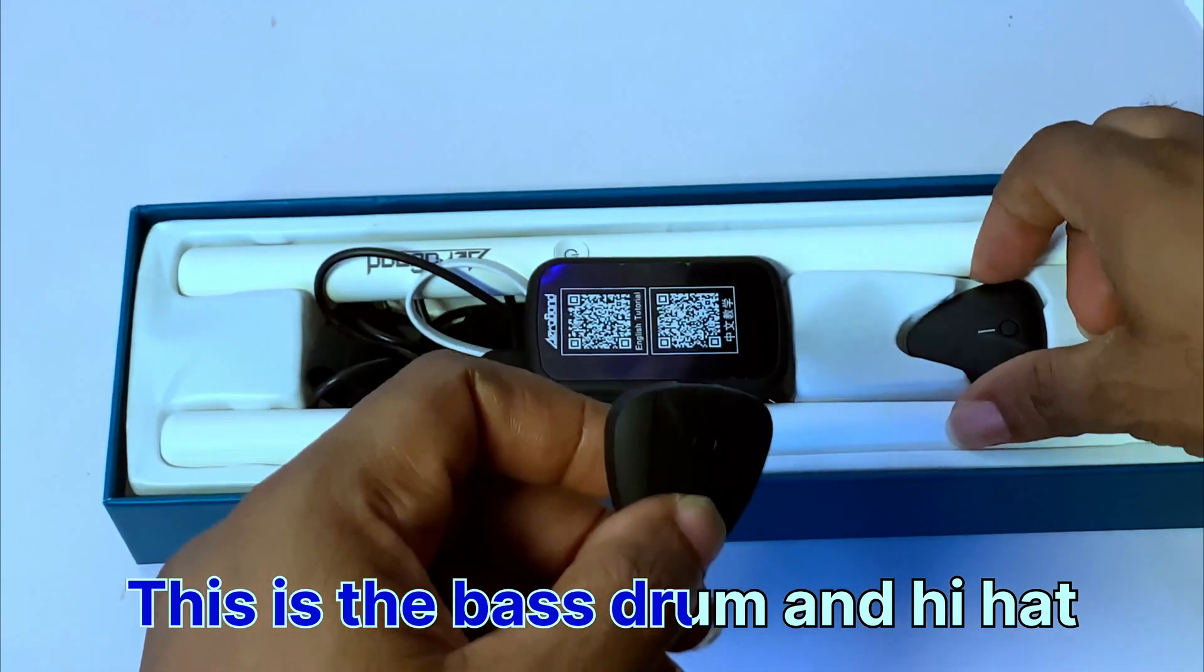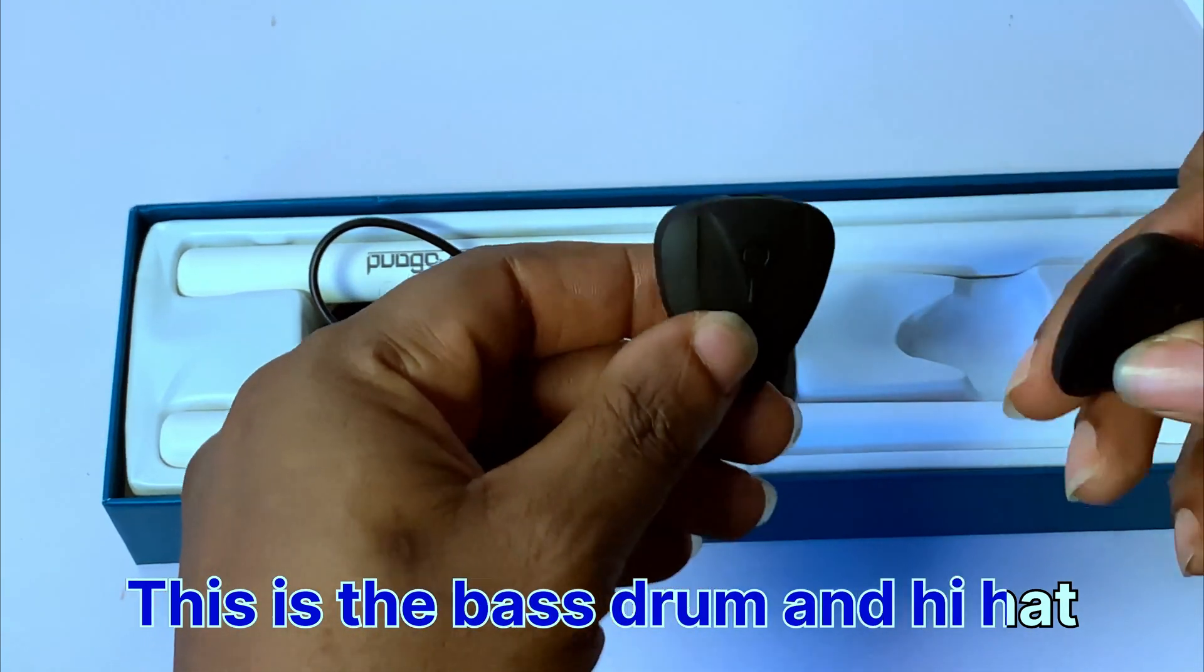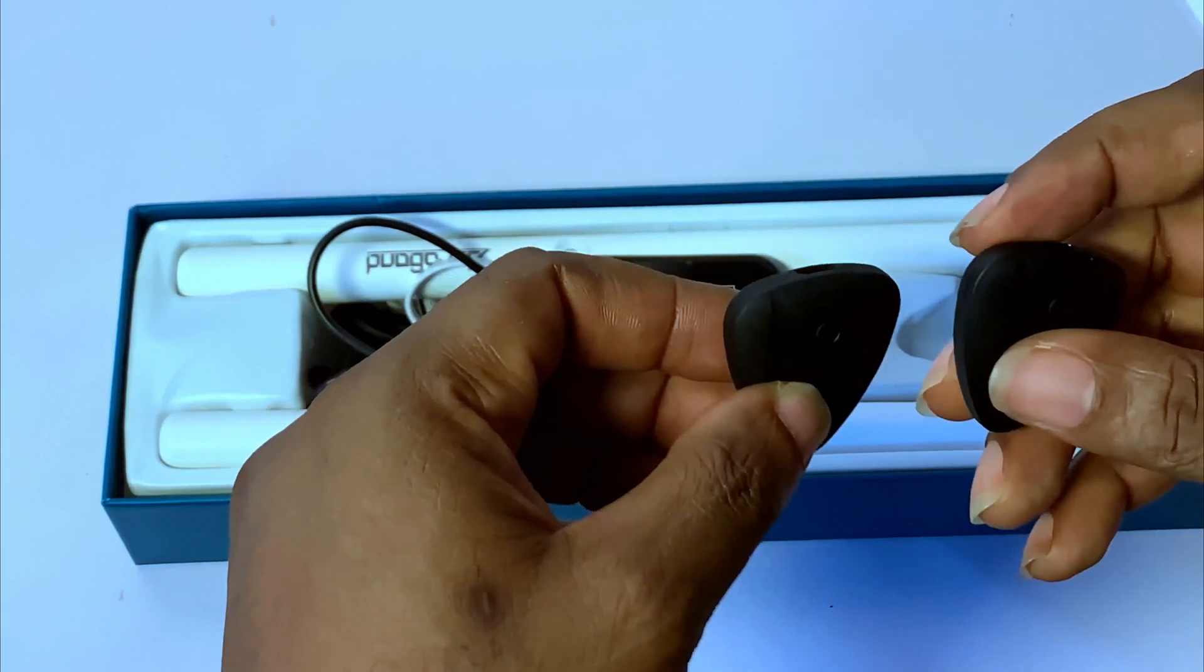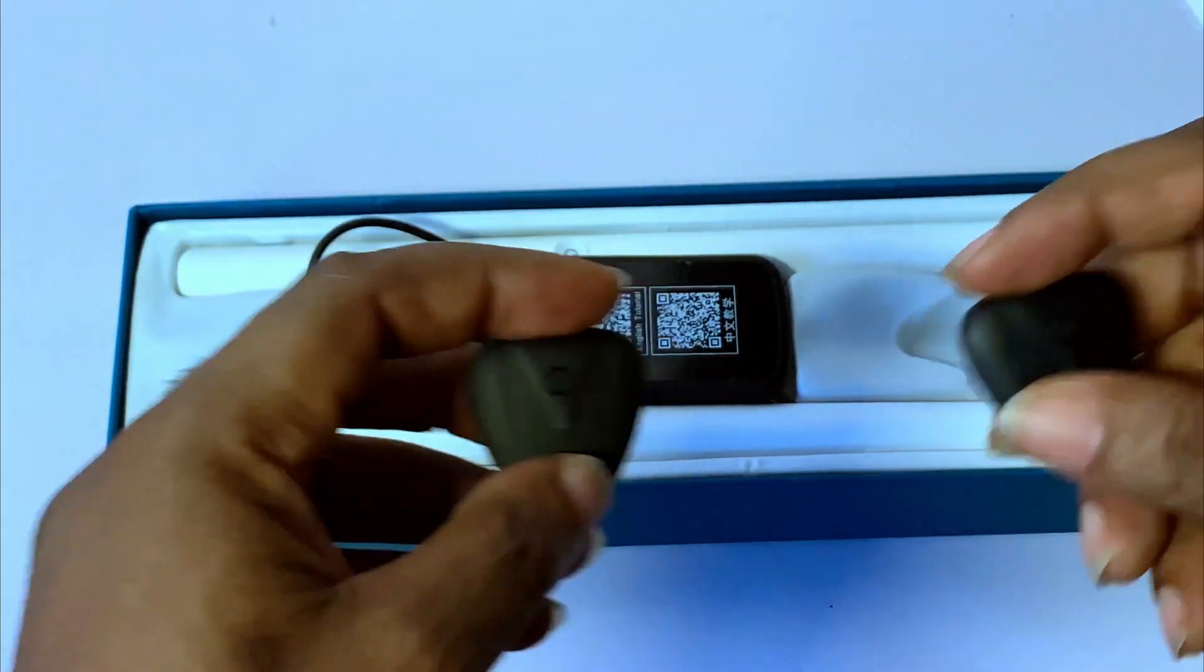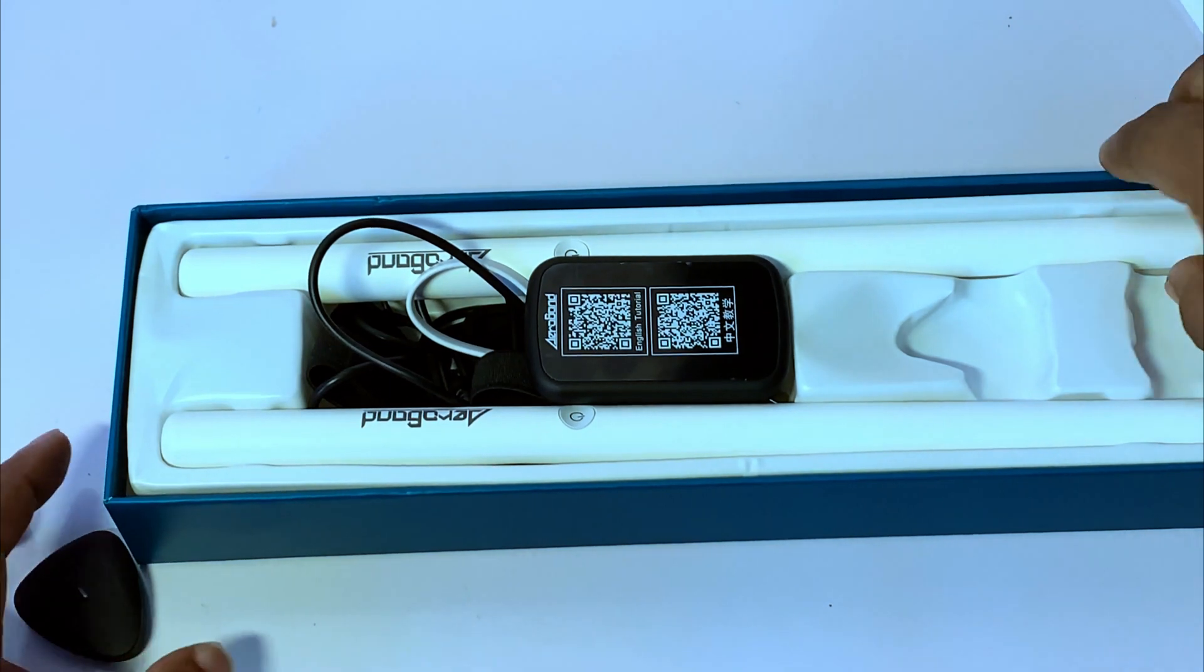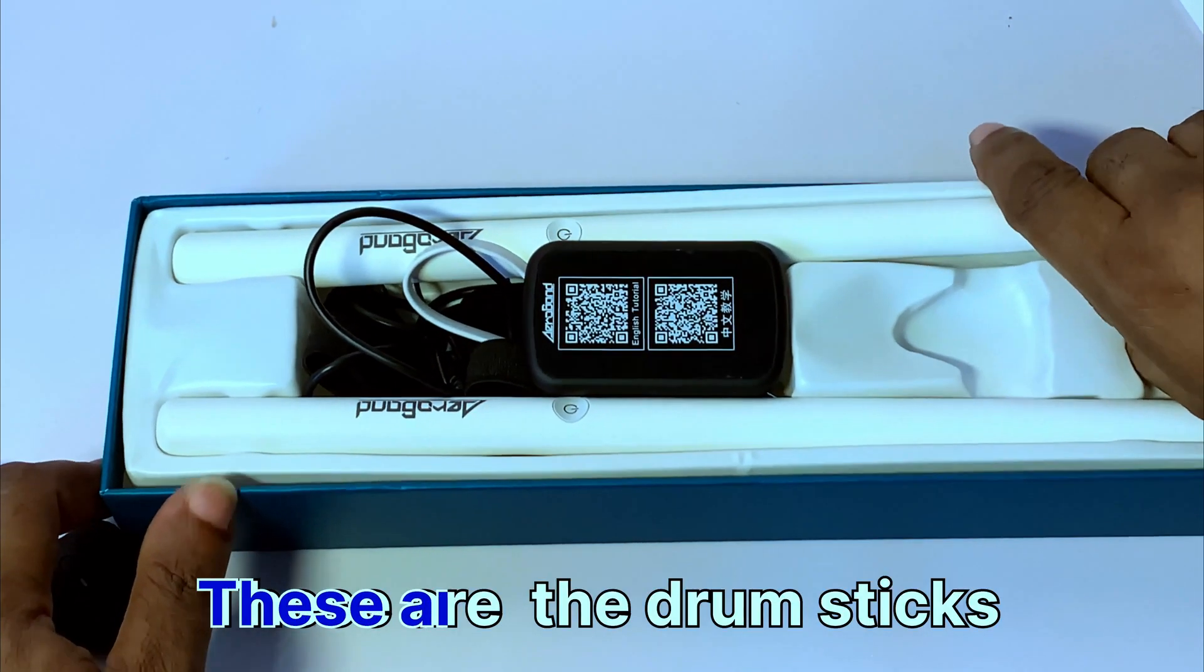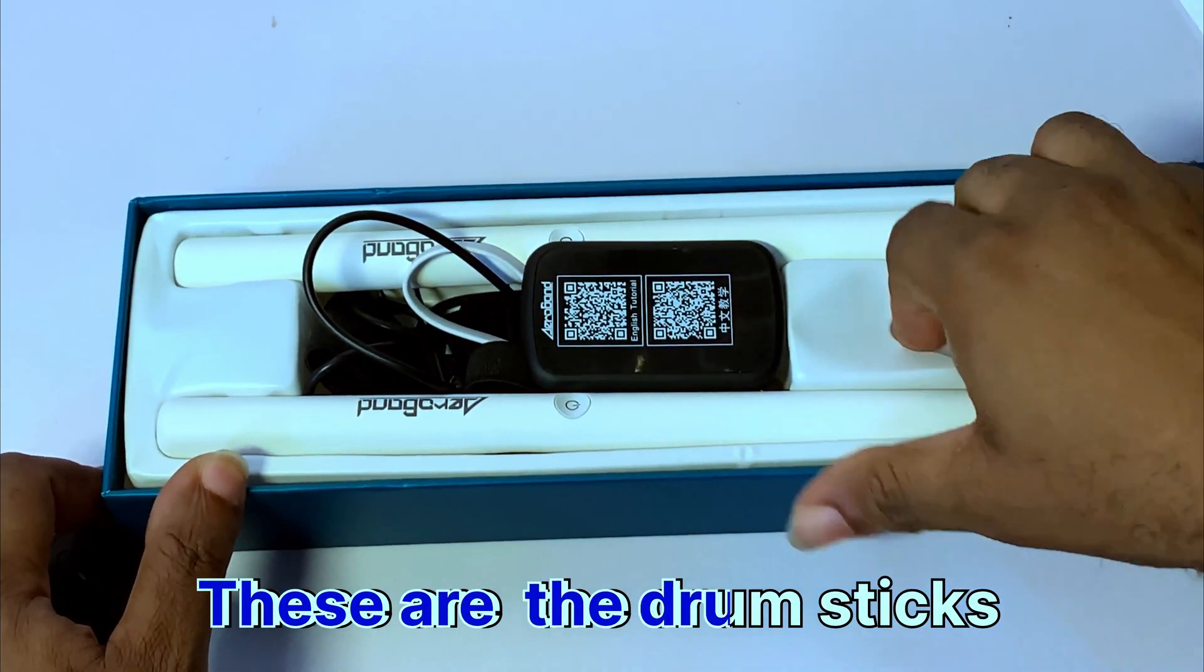If you open it, you'll see everything inside. You'll see the kick and hi-hat - these two things for your leg that you connect to your leg. Then you see the drumstick.